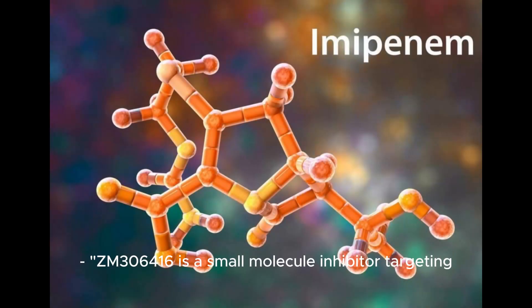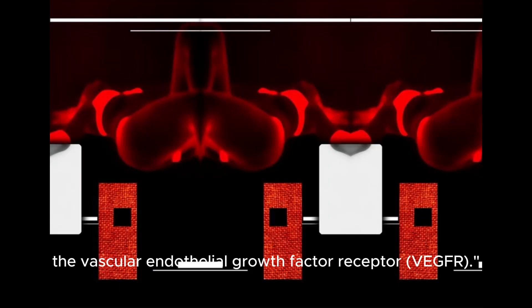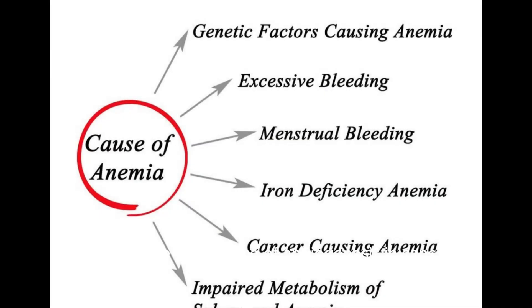ZM306-416 is a small molecule inhibitor targeting vascular endothelial growth factor receptor, VEGFR. Discuss the importance of angiogenesis in cancer progression.